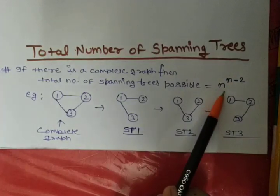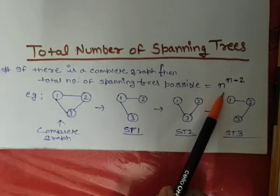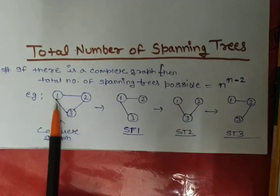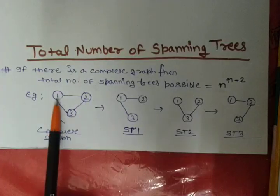Where n is the number of nodes or vertices the connected graph is having. So suppose here we are having a connected graph which is having 1, 2, 3... 3 nodes.